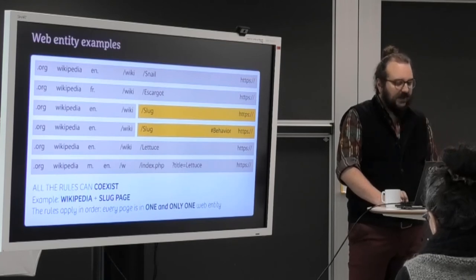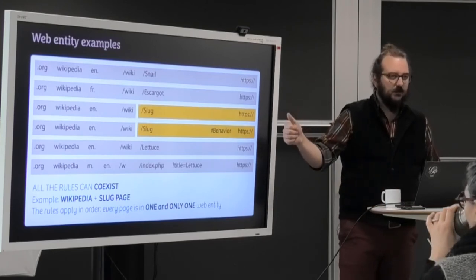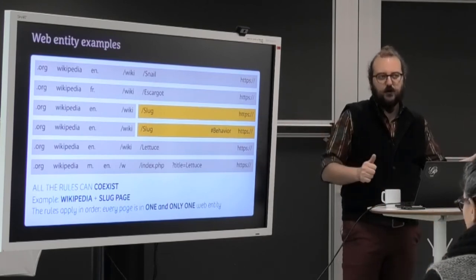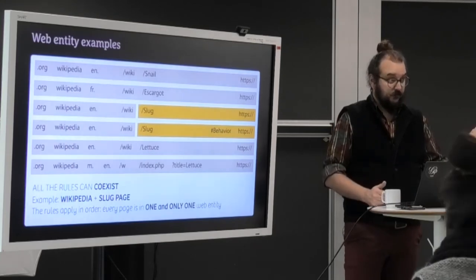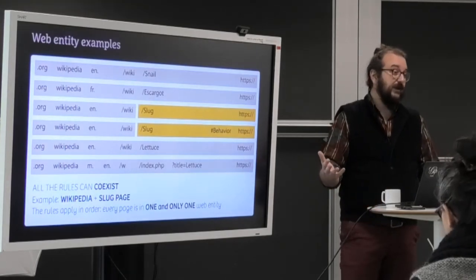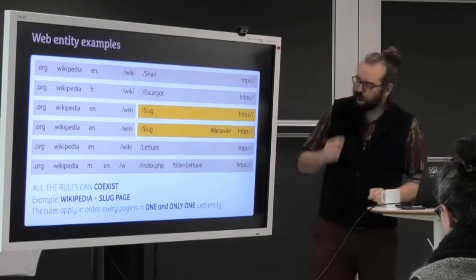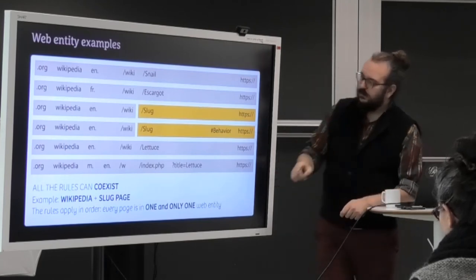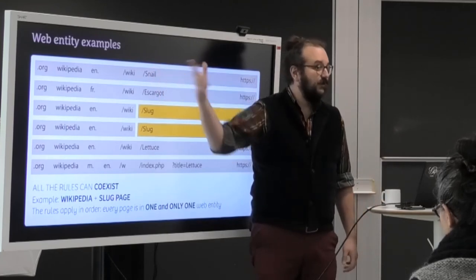Now, the different rules can coexist. And by that I mean that we could have one rule for Wikipedia and one rule for the page slug. So where does the page slug belong? It belongs to the web entity slug. So this works like that.